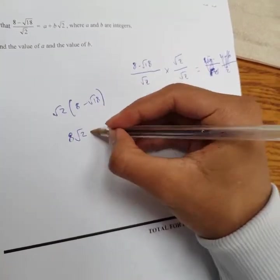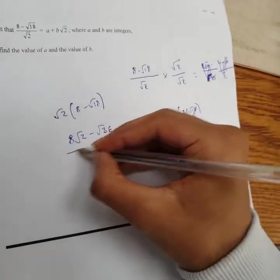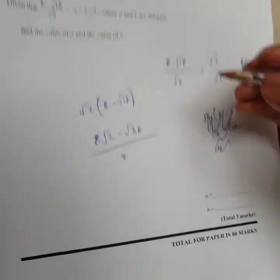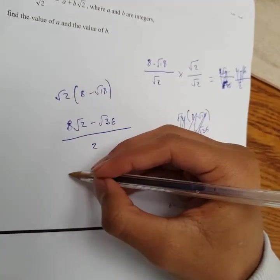Minus. Minus. Root 36. Yep. Over. You've got 2 there. So 2. Now, go on. I think you know what to do now. So I could divide them by 2. That's right. It's 4.